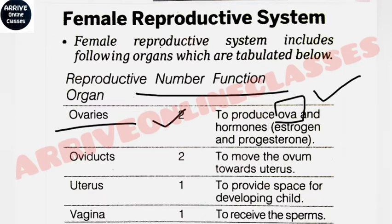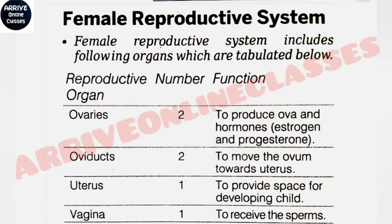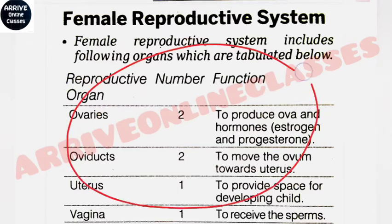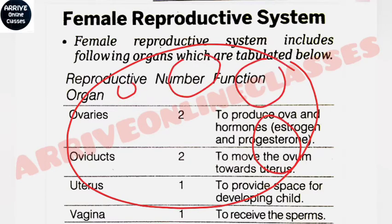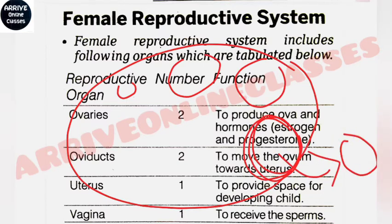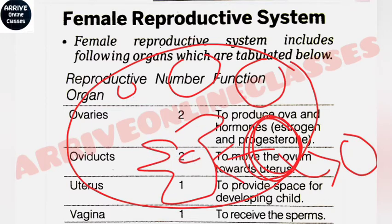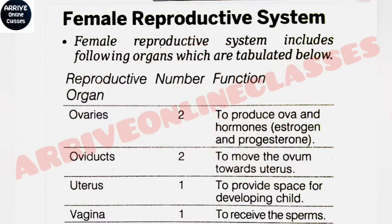The ovaries produce two hormones: estrogen and progesterone. The ovaries contain follicles, and when the Graafian follicle matures and releases the ovum, the residue structure that develops is called the corpus luteum. The corpus luteum is responsible for producing progesterone hormone. So, which structure of the ovary is responsible for producing progesterone? The answer is corpus luteum.